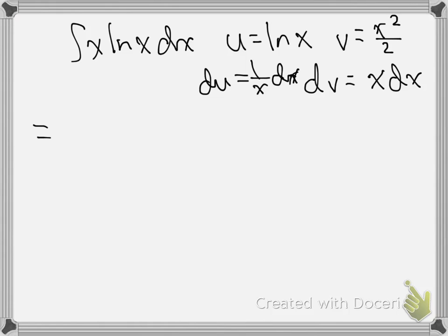So first off, uv, so ln of x times x squared over 2, minus the integral of vdu. v is x squared over 2, and du is 1 over x dx.